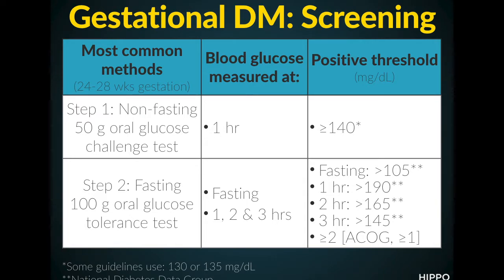So if two or more of these are positive, that's considered a positive test. ACOG, on the other hand, specifies only one of these needing to be positive and they consider that a positive test.